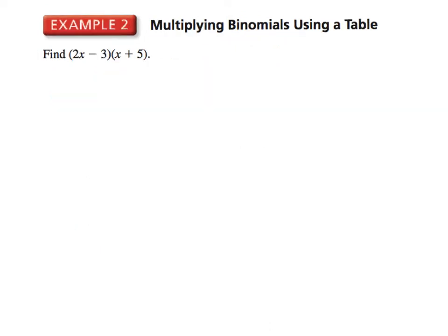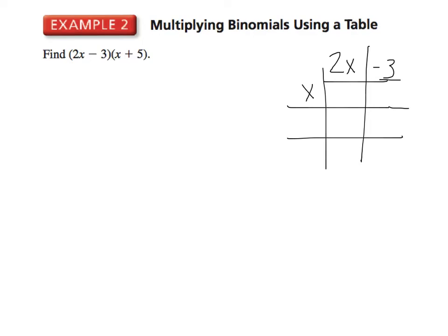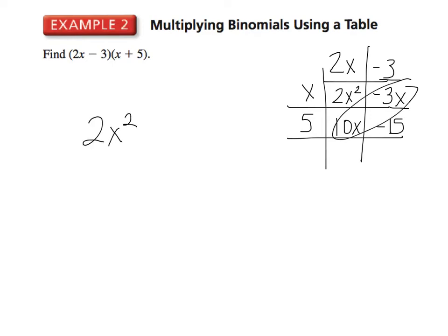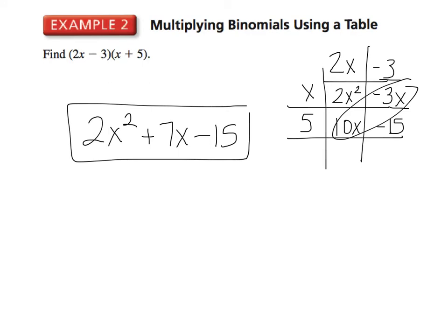You can also multiply using a table, though I really doubt anyone will use this in the long run. For example, multiplying 2x minus 3 times x plus 5: 2x times x gives 2x squared, negative 3 times x gives negative 3x, 2x times 5 gives 10x, and negative 3 times 5 gives negative 15. The 2x squared goes first, the middle terms combine into plus 7x, giving 2x squared plus 7x minus 15 in standard form.